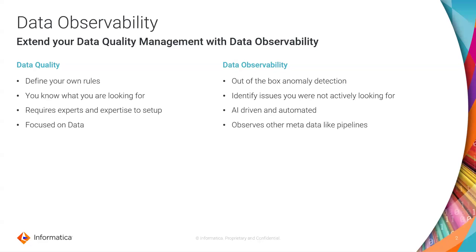Data observability doesn't replace data quality practices — they are as valid as ever. At a high level, data quality practices involve defining your rules, applying them to the data, and seeing how the data adheres to those rules. Data observability, on the other hand, brings out-of-the-box anomaly detection. In data quality, you need to know what you're looking for in order to create the rules. Data observability extends that to identify issues that maybe you are not actively looking for.